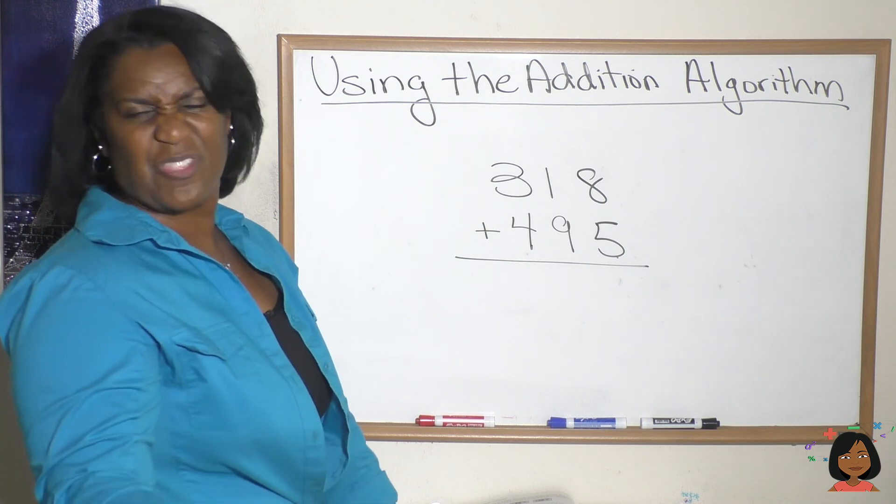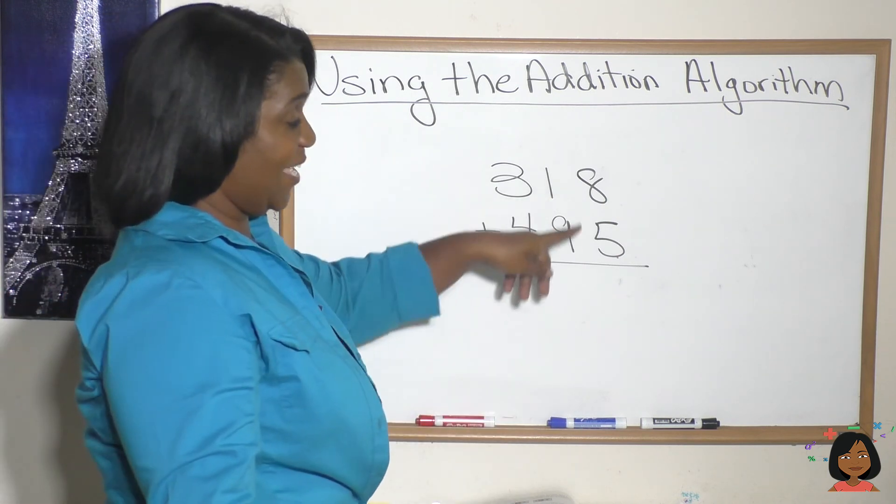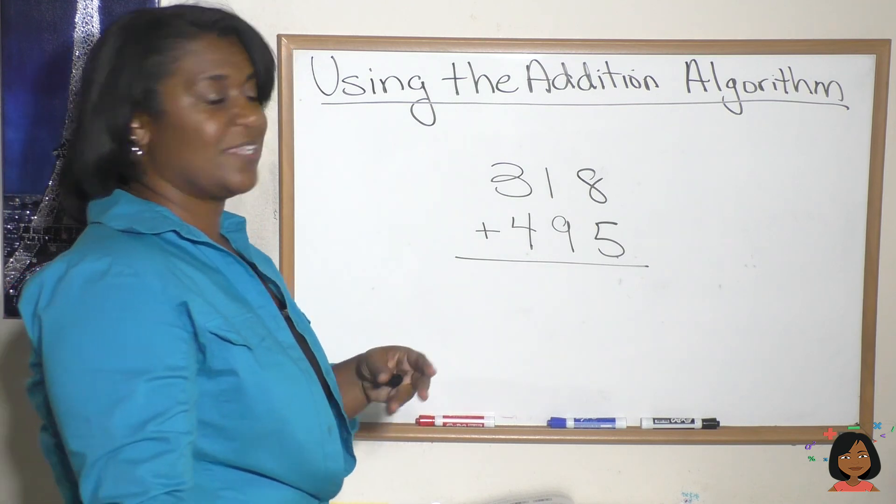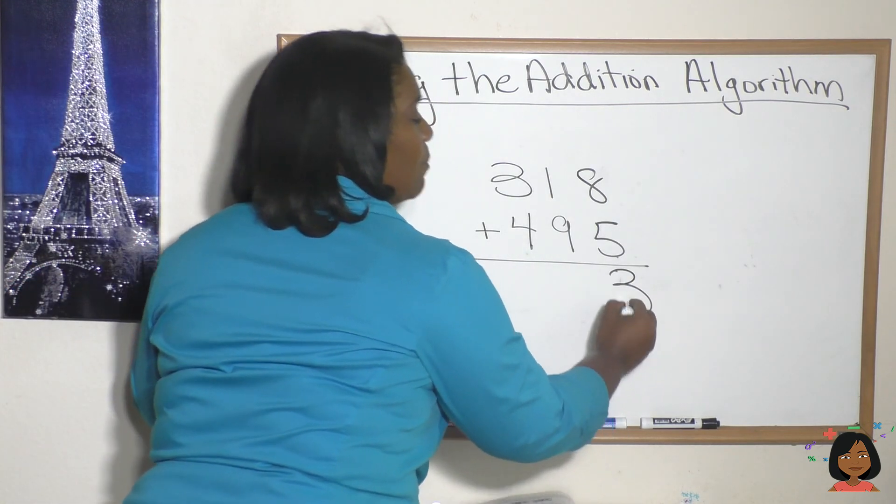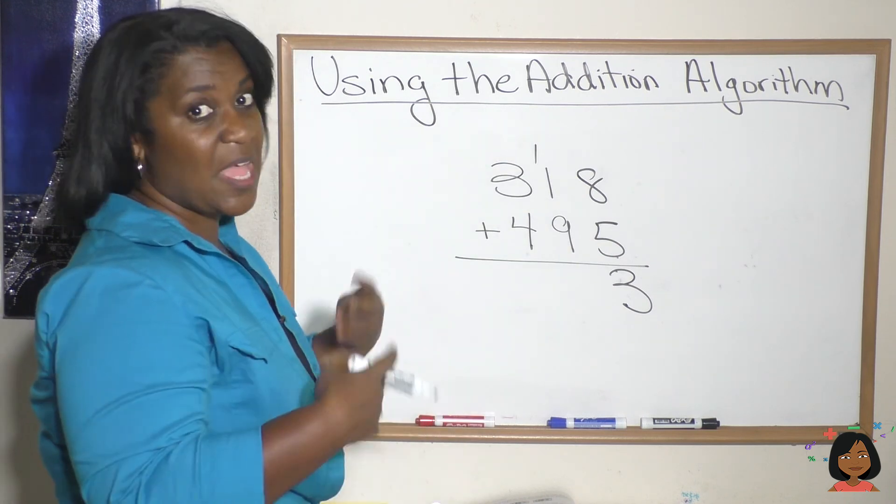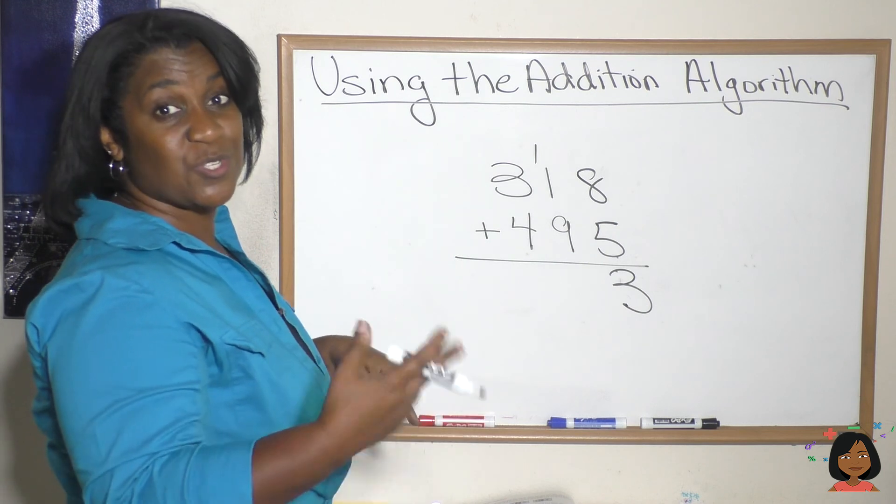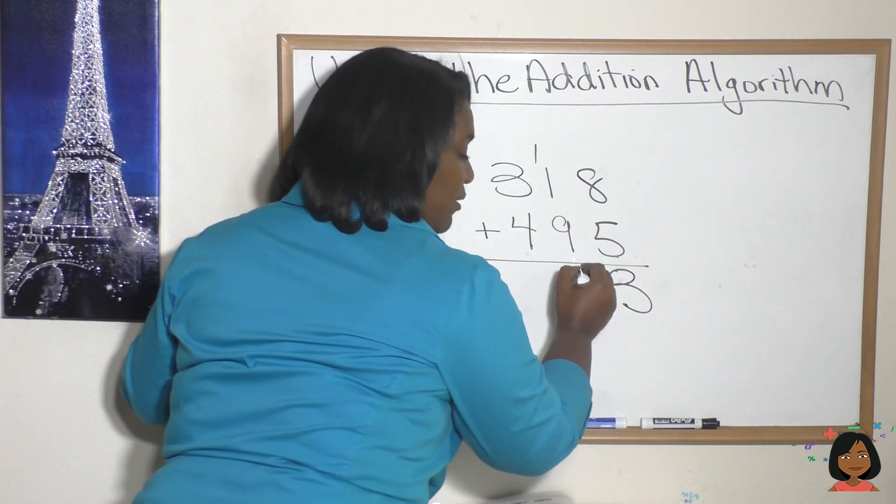Let's try it with this number. This time we won't use any money. We always start in the ones place. 8 + 5 is 13, so we put our 3 down but bring our one ten over to the tens place. Now let's add there. 1 + 1 is 2, 2 + 9 is 11. We're gonna put the one down and bring another one up to the top because now it's in the hundreds place.